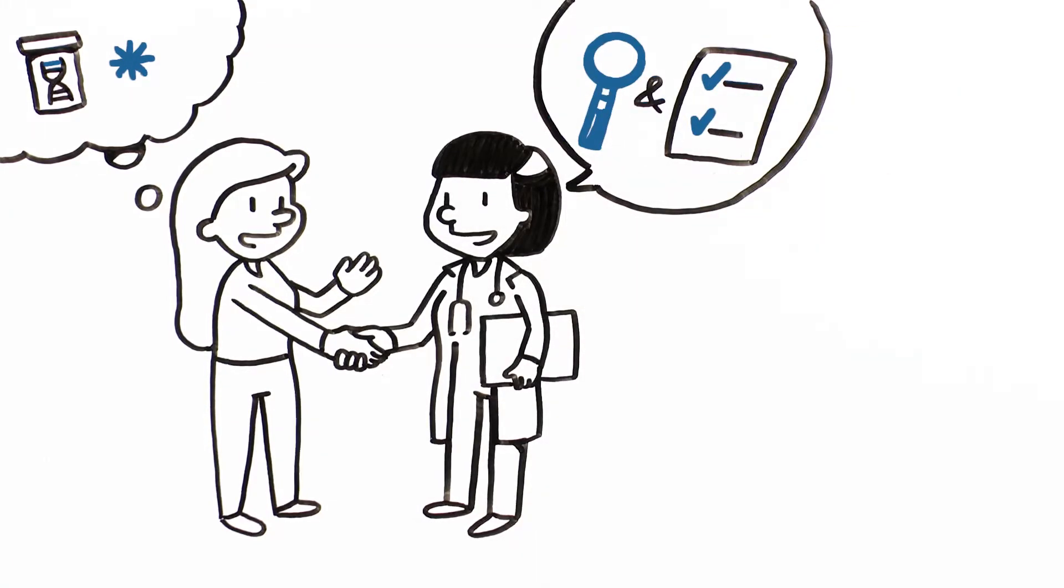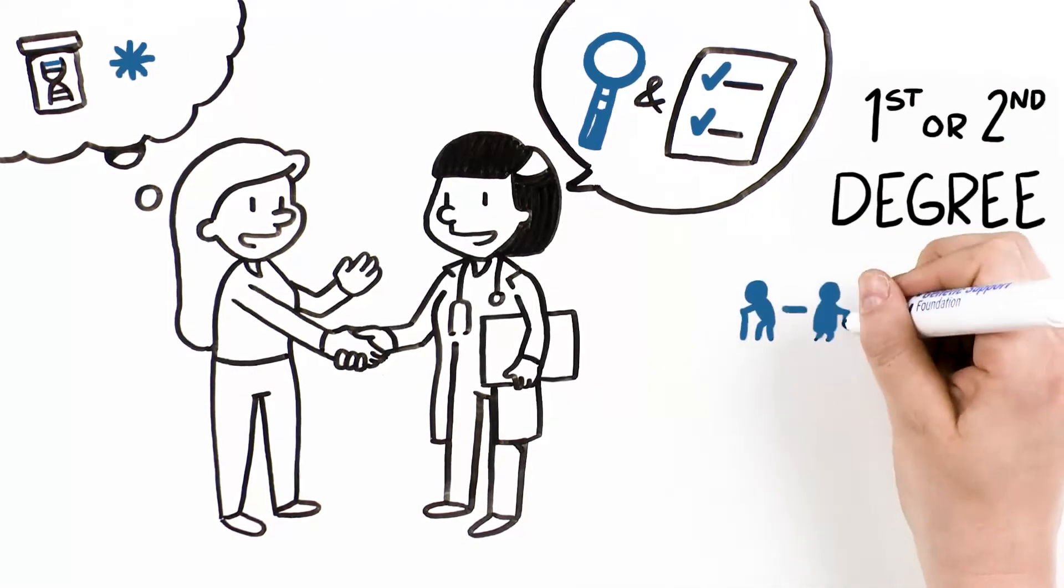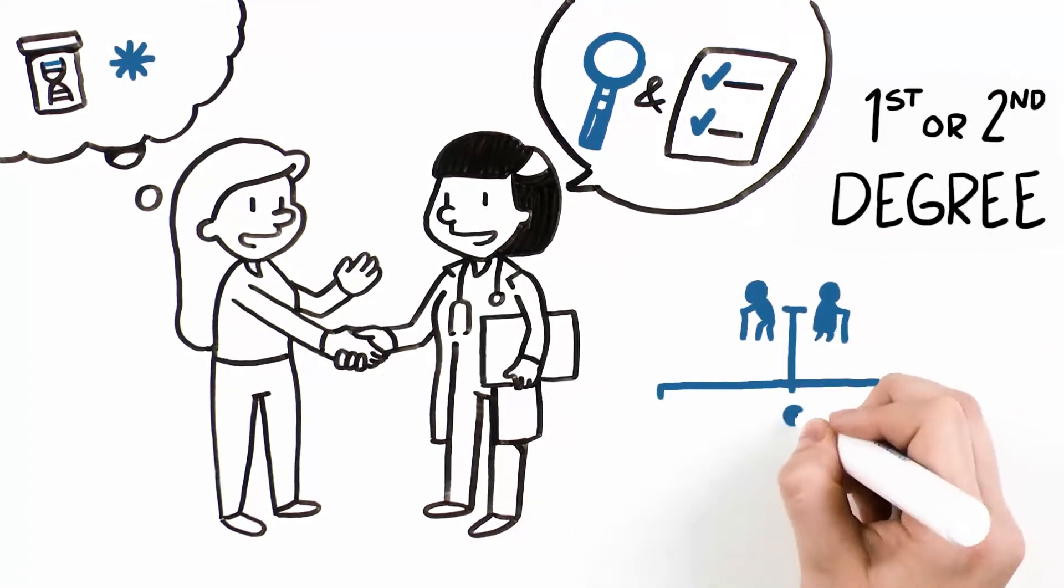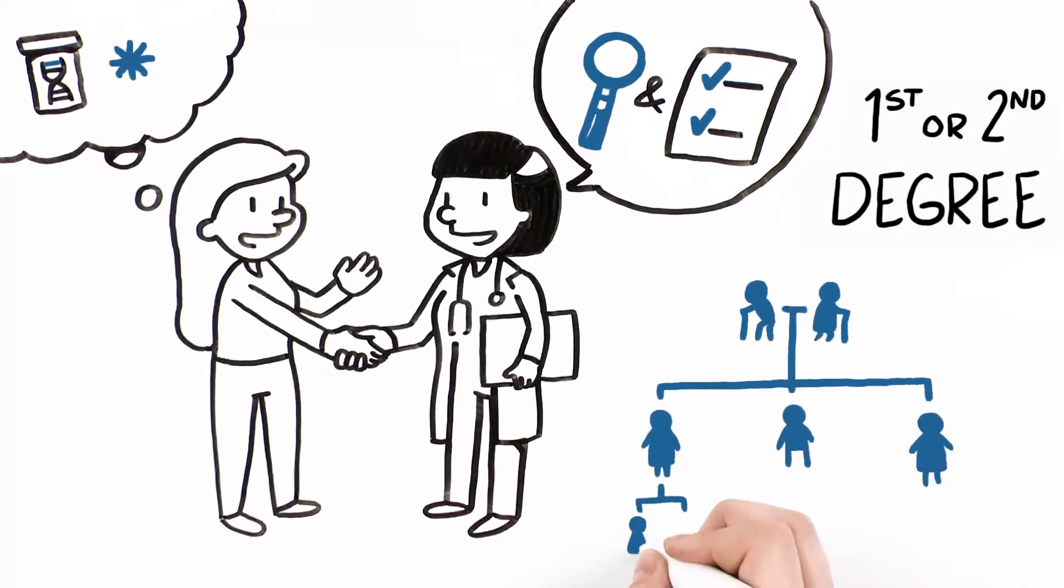Relatives who may be at risk commonly include first and second degree relatives such as parents, siblings, children, uncles, aunts, nieces, nephews, grandparents, grandchildren, and half-siblings.